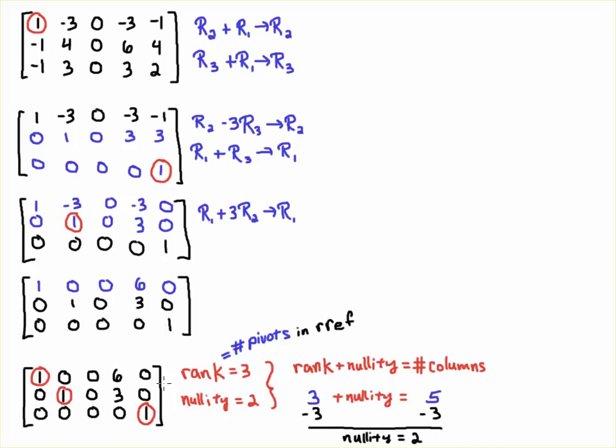Now you might be wondering what is the business with this rank and nullity. Why is this important? That's coming up. There are some theoretical considerations that come when is a system solvable, when will we end up with a consistent system, when will the system be inconsistent, when will we have an infinite number of solutions and so on and so forth.